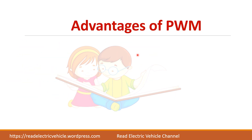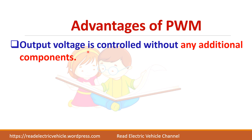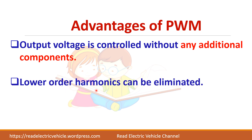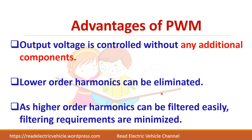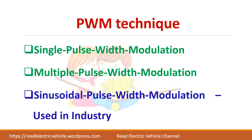Let us see the advantages of PWM. You are able to control the output voltage without any additional components. Lower order harmonics are eliminated, and higher order harmonics that remain can be easily filtered out. There are different types of PWM techniques: single pulse modulation, multiple pulse modulation, and sinusoidal pulse width modulation. In this video we will see single pulse and multiple pulse modulation. Sinusoidal PWM, which is widely used in industry, will be covered in the next video.